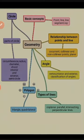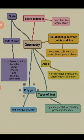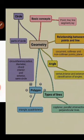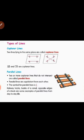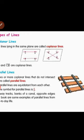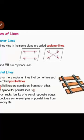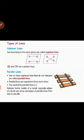The next concept is types of lines and types of polygon. Under types of lines, you will see coplanar, parallel, intersecting, and perpendicular lines. And for polygons, triangle and quadrilateral. First is coplanar lines. Two lines lying in the same plane are called coplanar lines. You can see here lines A, B and C, D are two lines — both lines lying in the same plane, so these two lines are coplanar lines.